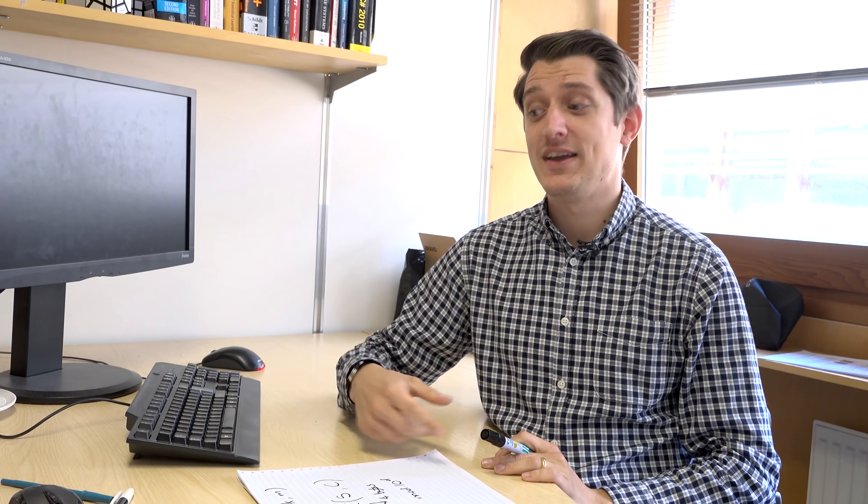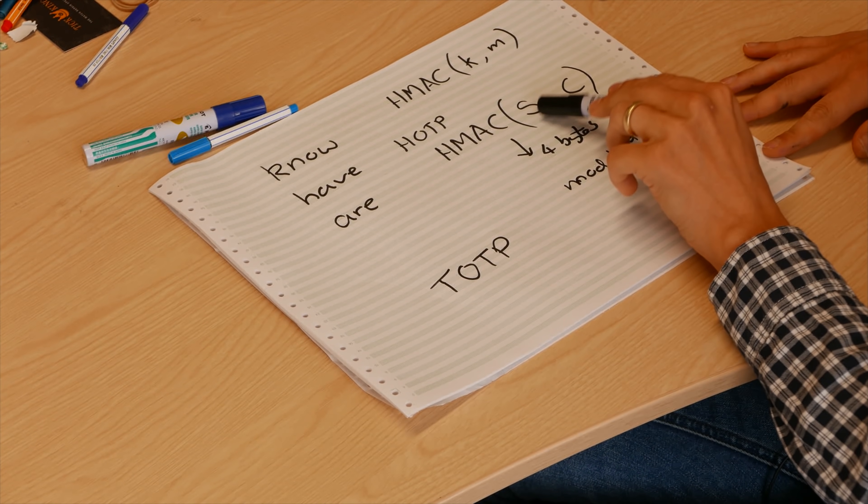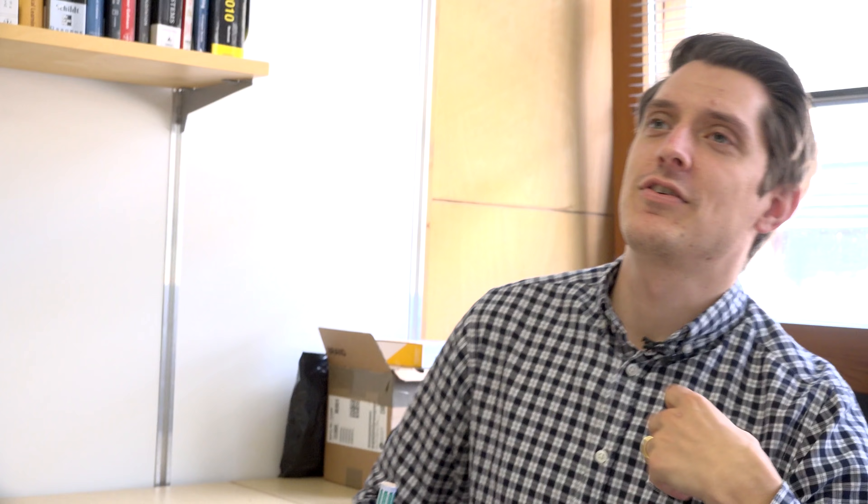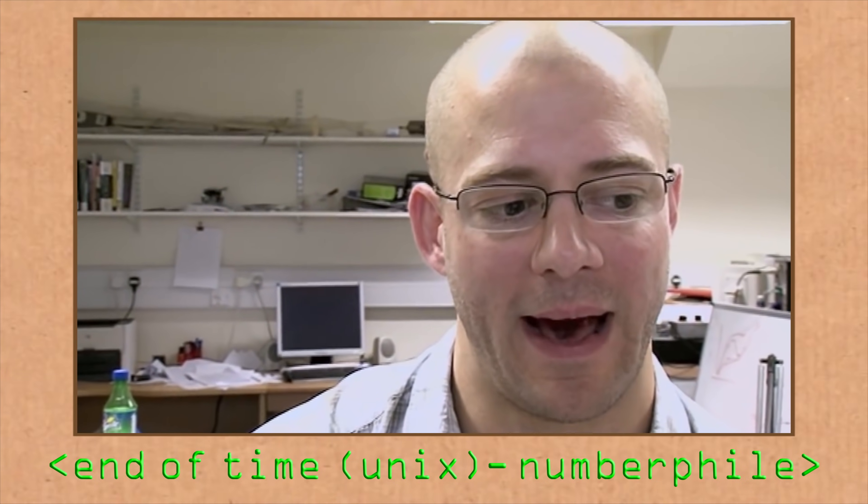What's happening here is we're replacing our increment counter with the current time. As long as me and the server are roughly at the same time we can log in. We still keep this shared secret between ourselves. There's obviously a few niggly details that we have to consider. What unit of time we're using? We can't use milliseconds because the chances of me and the server being on the same number of milliseconds is astronomically low, and I can't type in the one-time password in a millisecond.